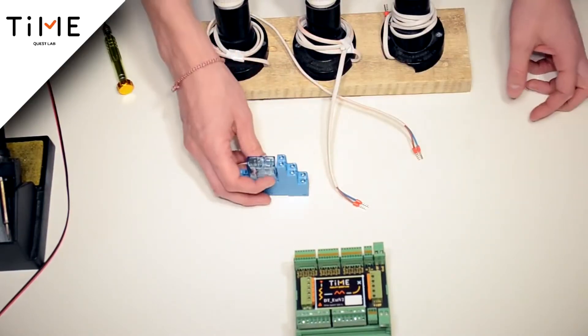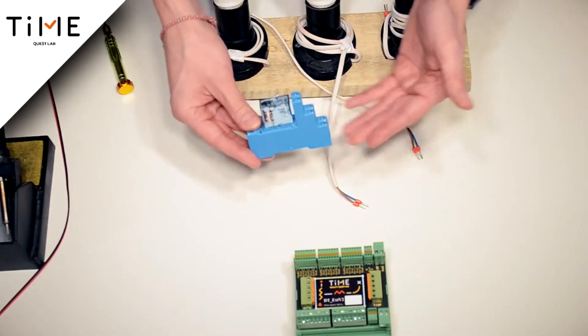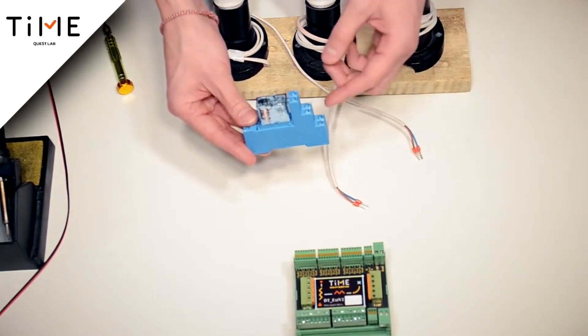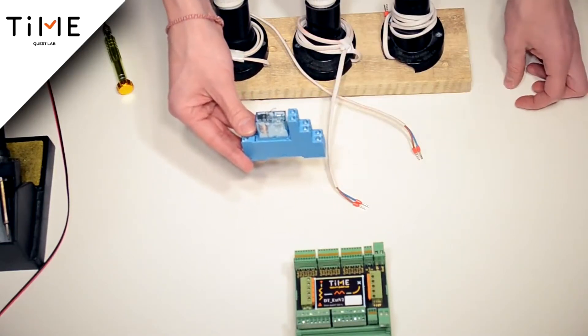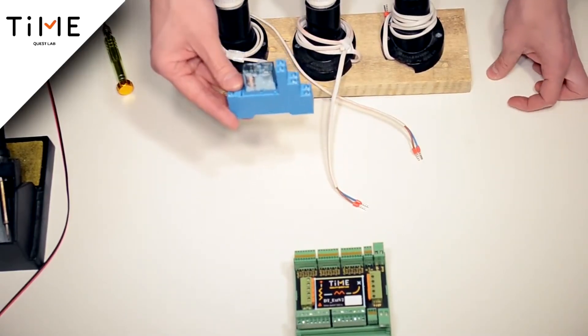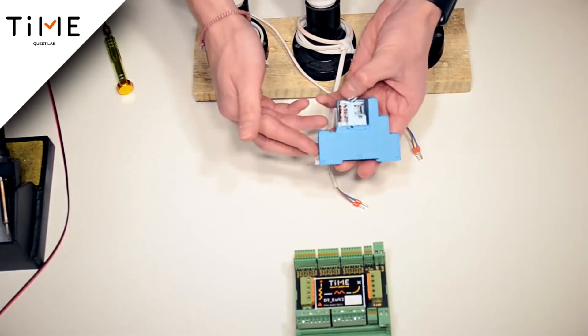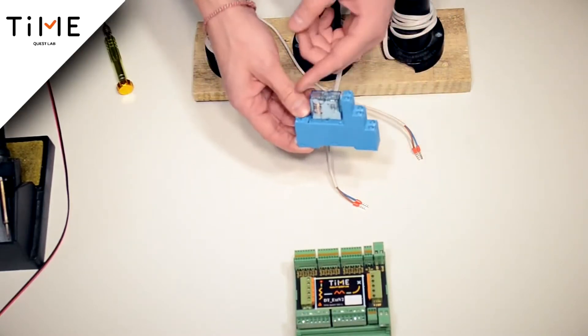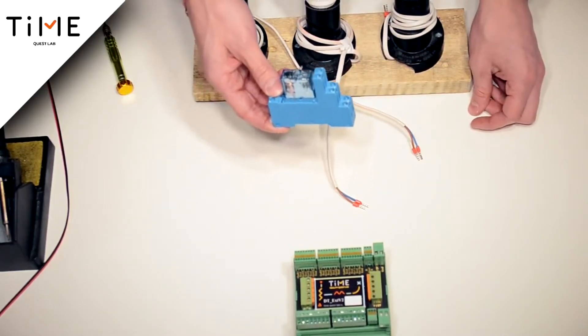It works as follows. In the lower block, called ACOM, the power supply is connected. Normally open contact and normally closed contact are connected to the element that we will control. Thanks to the coil with the power supply of 12V, we can turn the device on or off or replace one device with another one.